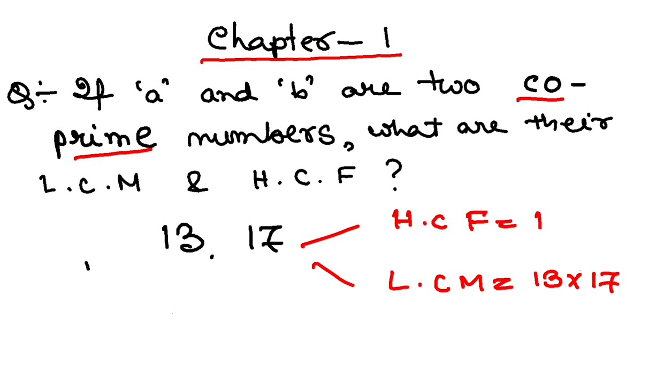So if the numbers are A and B, in this case the HCF is 1 and the LCM is the product of the two numbers, that is AB. These two questions are similar. Let's go to the next question now.